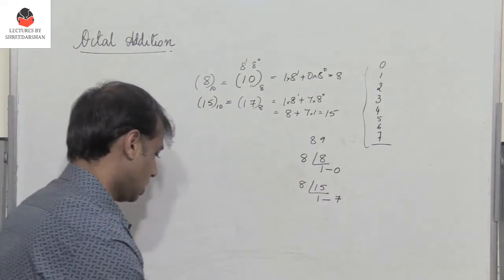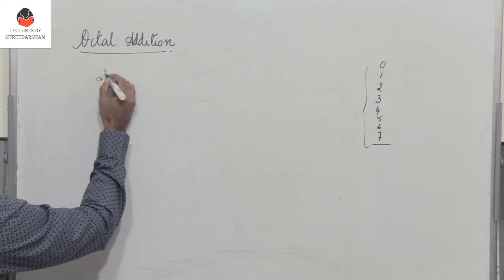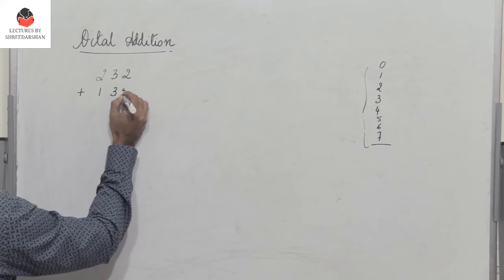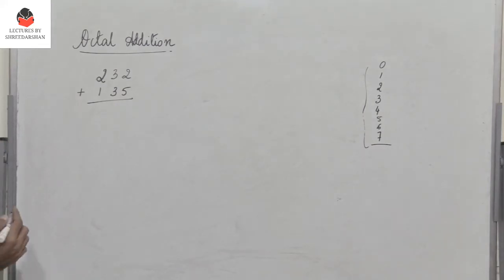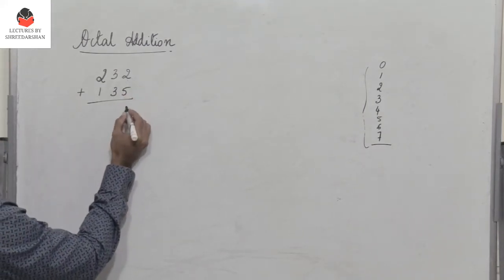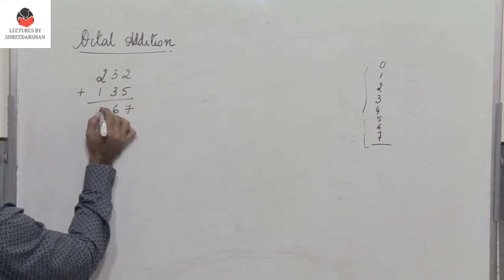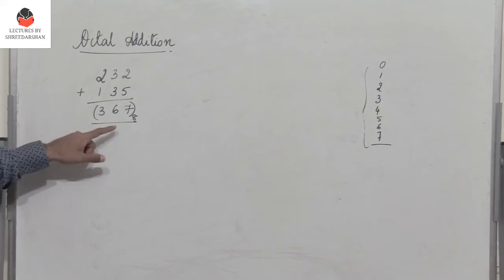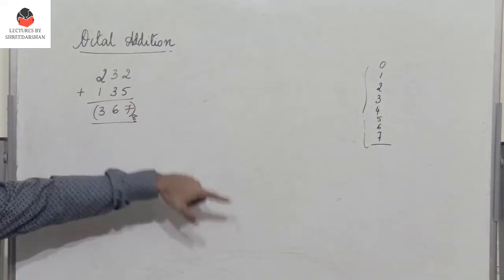Let us take a few examples. The first example: 2 3 2 plus 1 3 5. Remember these are octal numbers, so the numbers only vary from 0 to 7. 5 plus 2 is 7, not greater than 7. 3 plus 3 is 6, and 2 plus 1 is 3. So 3 6 7 is the added result in octal format. We don't have to do anything because none of the digits are greater than 7.